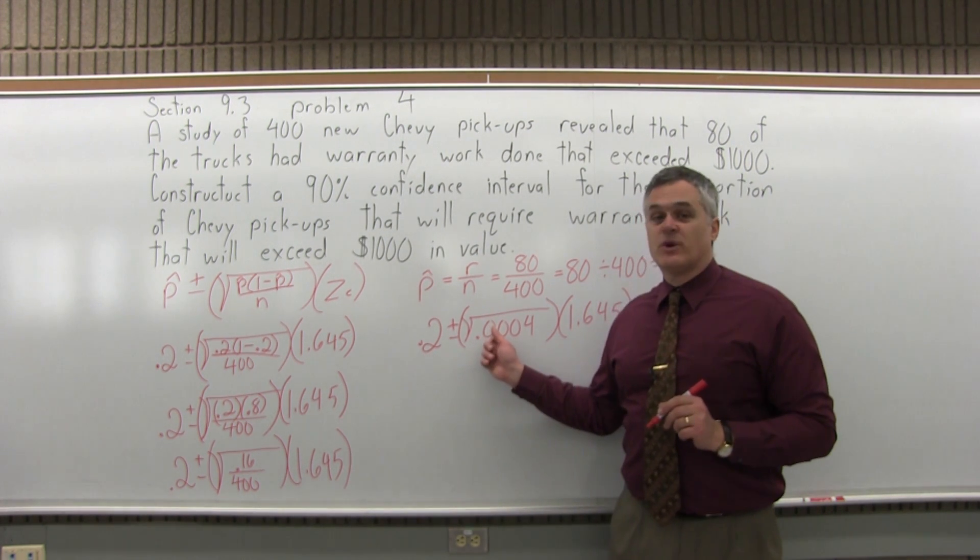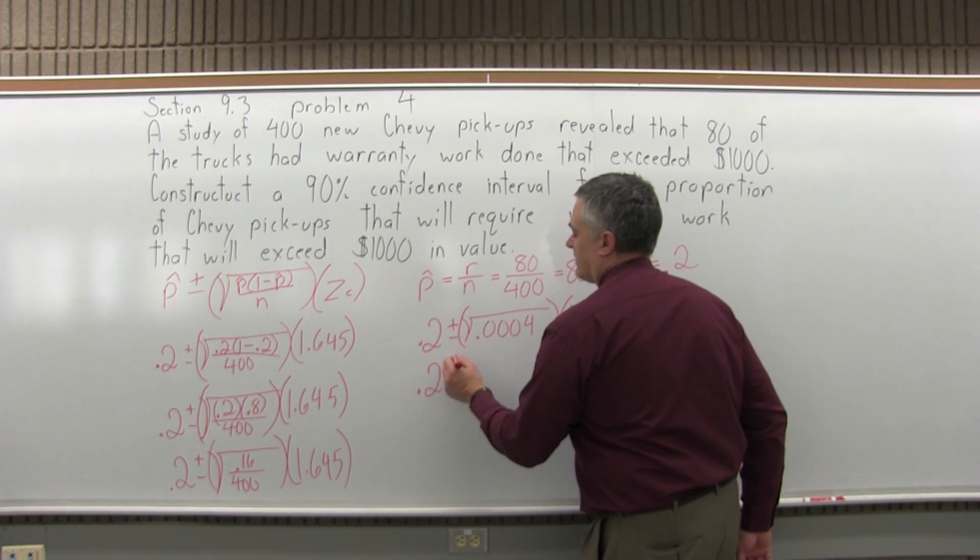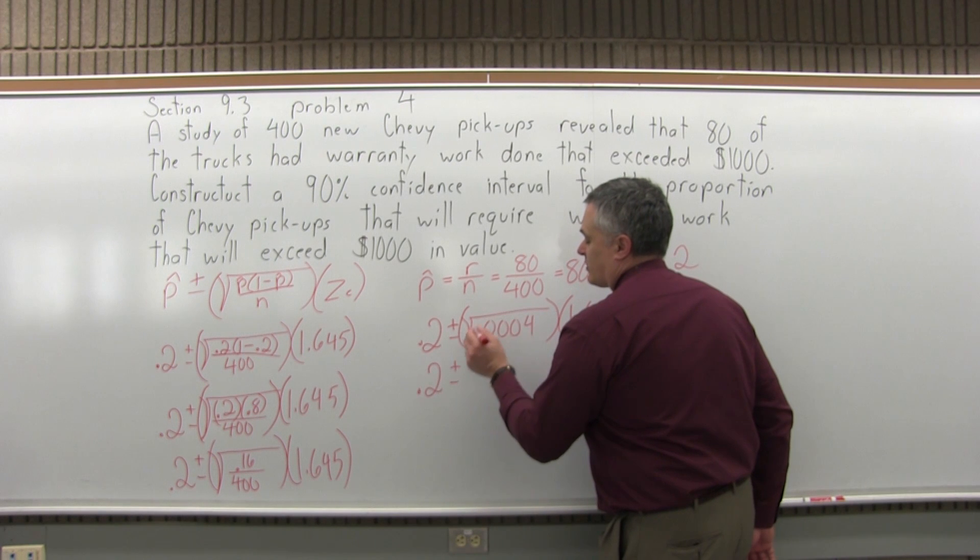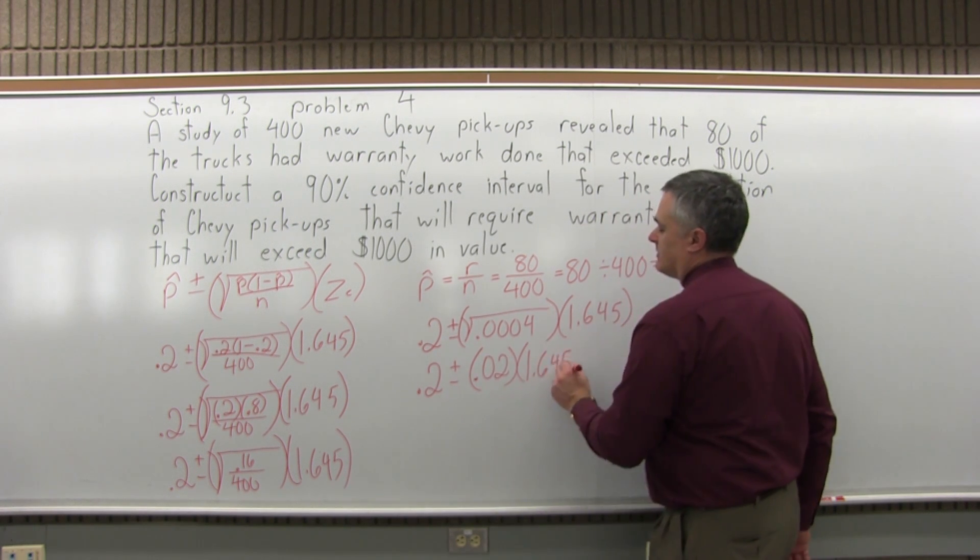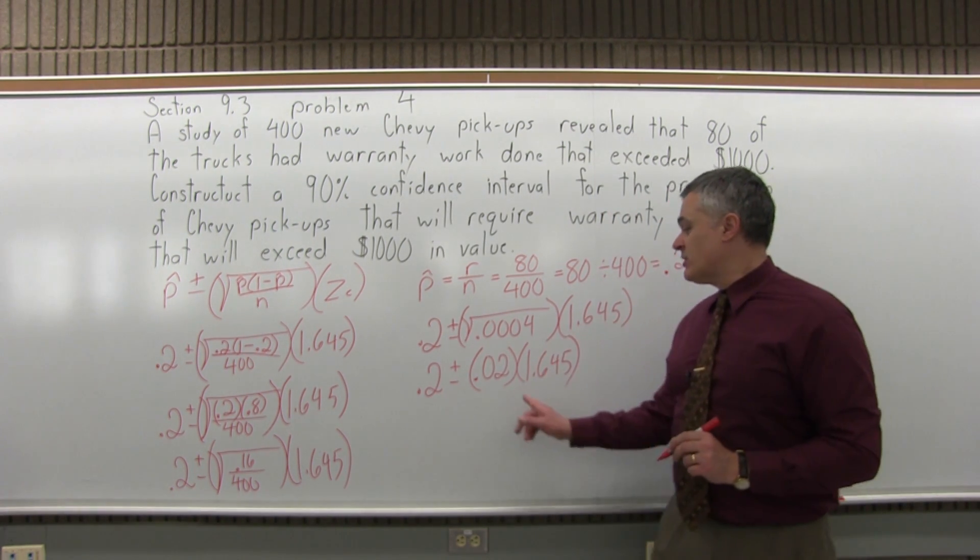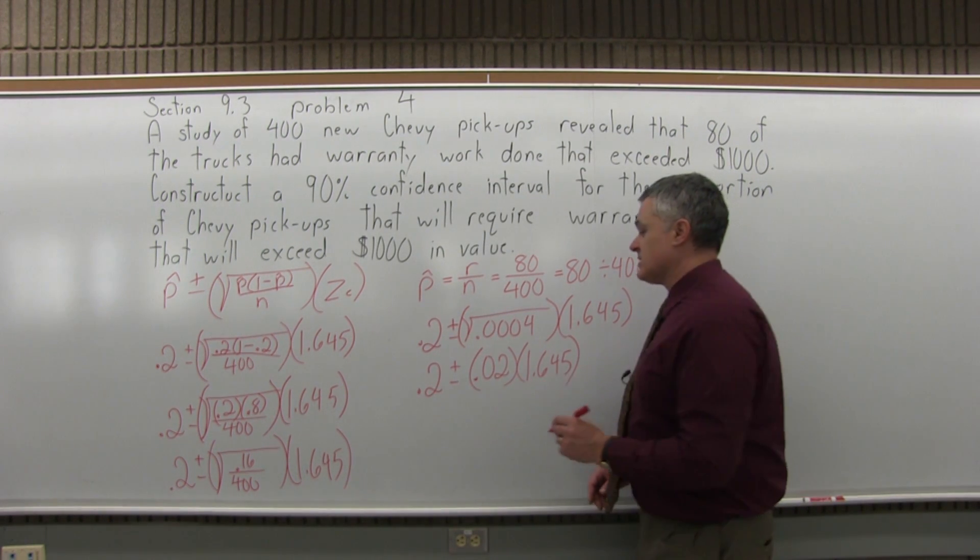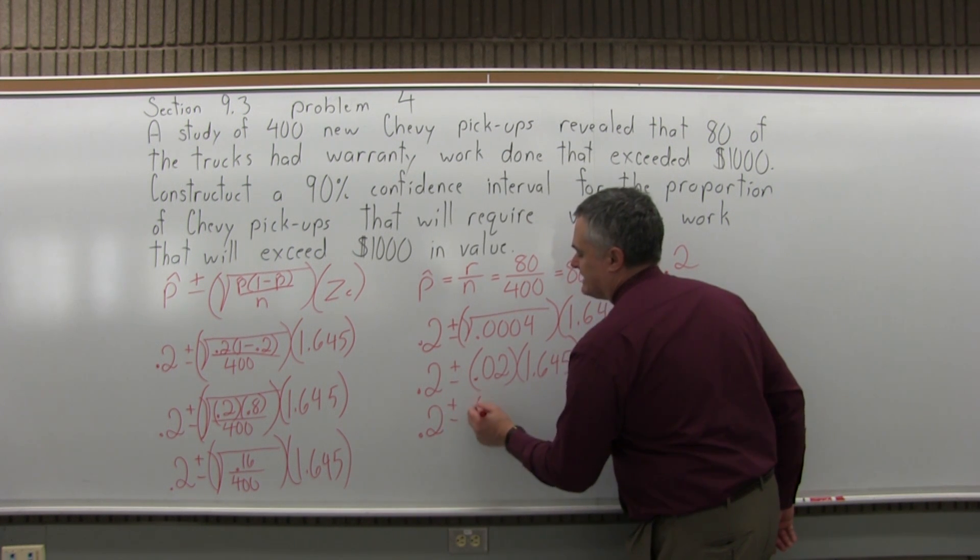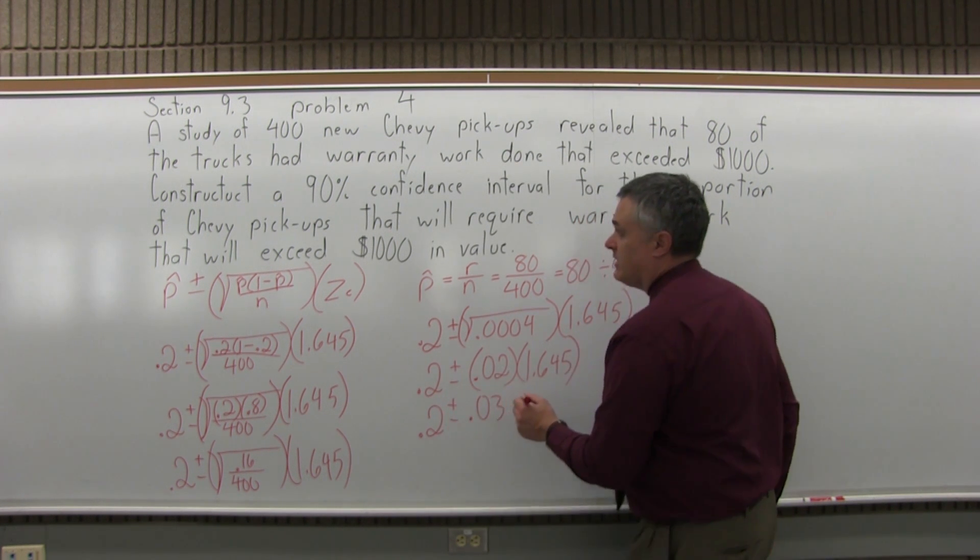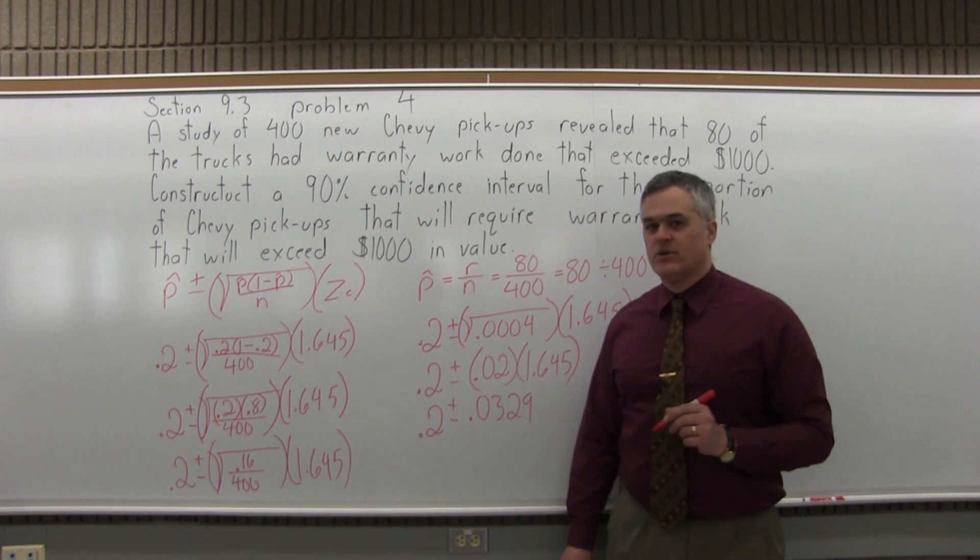So now let's go ahead and take that square root. Again, your calculator will tell you pretty quickly it's 0.02. So I have 0.2 plus or minus, the square root's done now, 0.02 times 1.645. So now I can go ahead and multiply 0.02 times 1.645. So I have 0.2 plus or minus 0.0329. That's the result you'll get when you multiply.